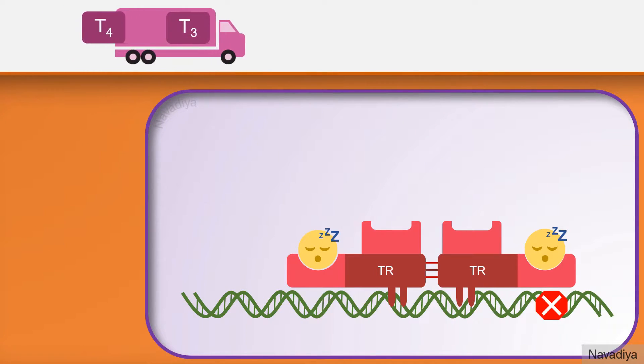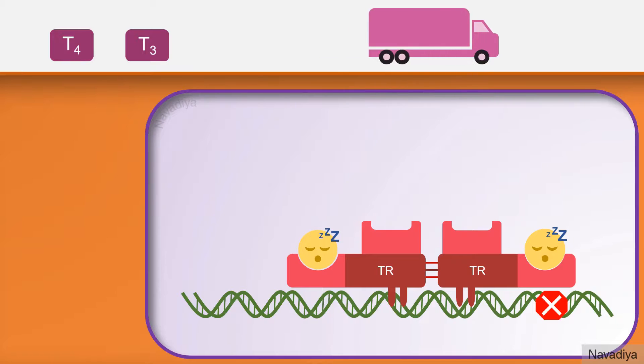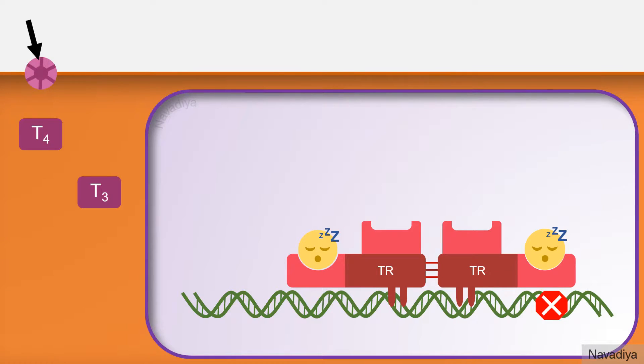Now let's see what happens when thyroid hormone comes. So here we have thyroid hormones. They enter into the cell passively or actively by some non-specific transporters. As we have seen in video of transport and peripheral conversion of thyroid hormones, T4 is converted into T3 by deiodinase enzyme.